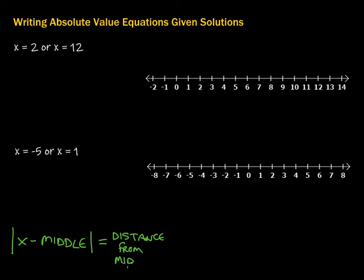So let's take a look at that in these two situations. And we're going to come back to this in a little bit to explain a little bit more about what's going on here too. If we want to write an absolute value equation that has the solutions of 2 and 12, what we want to do first is let's just work off this number line so we get a good feel for this.